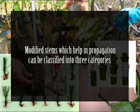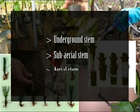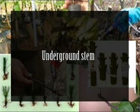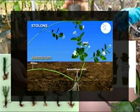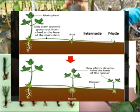Modified stems that help in propagation can be classified as underground stem, sub-aerial stem, and aerial stem. The underground part of the stem serves two functions: it tides over unfavorable conditions by storing food and becoming dormant, then germinates with the help of auxiliary buds under favorable conditions. The runner is a slender prostrate branch with short and long internodes; it rises from the base of the plant, creeps on the ground, produces roots, and grows into a new plant.